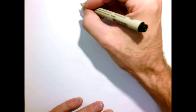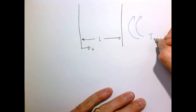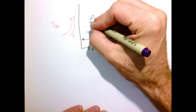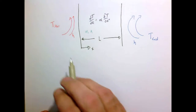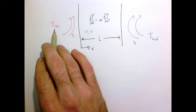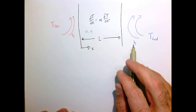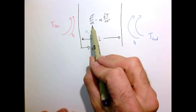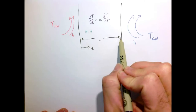Let's work a problem in one-dimensional heat conduction. I'm going to have a one-dimensional wall of length L, with the coordinate direction X going from left to right. On the left side I'm going to hold a fluid at a hot temperature with a convection coefficient H, and on the right side there's a fluid at a cold temperature with the same convection coefficient H. The solid is between these two regions, and the heat equation describes the evolution of the temperature field between X equals zero and X equals L.